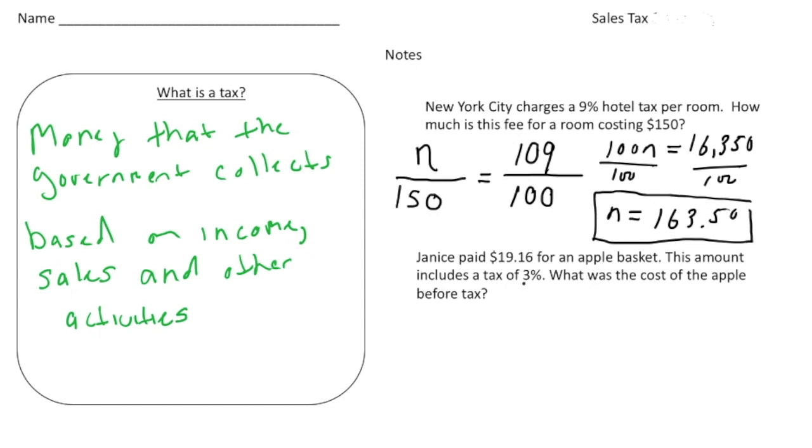It says Janice paid $19.16 for an apple basket. All right, this amount includes a tax of 3%. Okay, what was the cost of the apple before the tax? All right, so this one's going to be a little bit different because now the tax is actually included in the price that was paid.